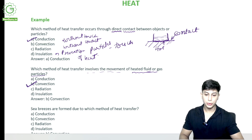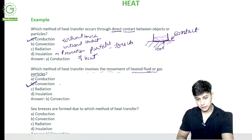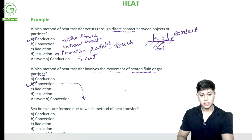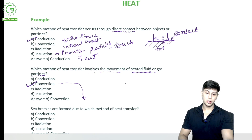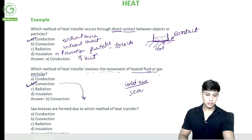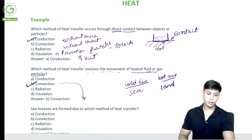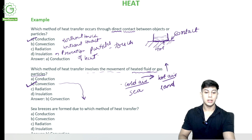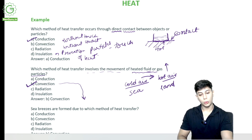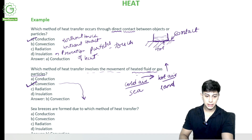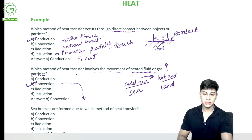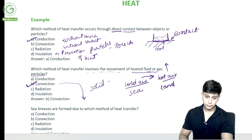Sea breezes are formed due to which method of heat transfer? In sea breeze, there is cold air over the sea and hot air over land because land gets heated. Cold air from the sea moves towards land and hot air rises upwards. Since air and water are involved in this heat process, this is convection — there is no conduction happening between solids here.